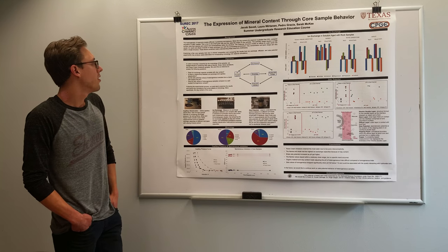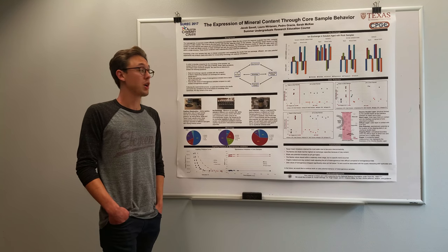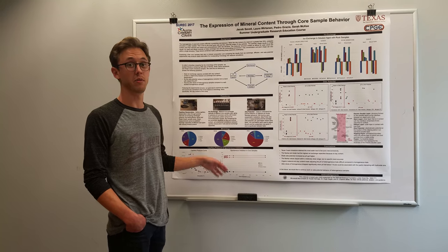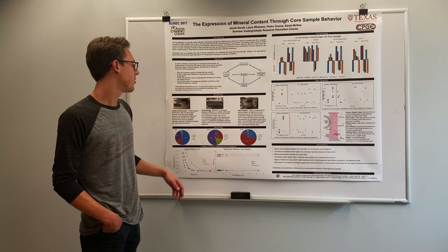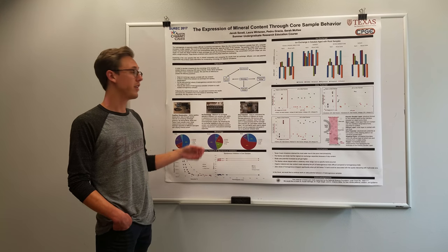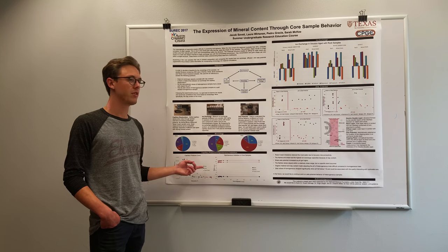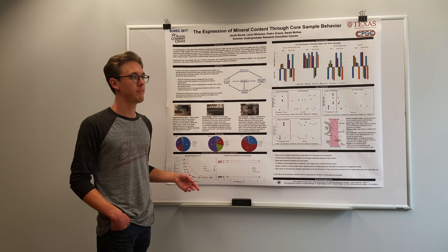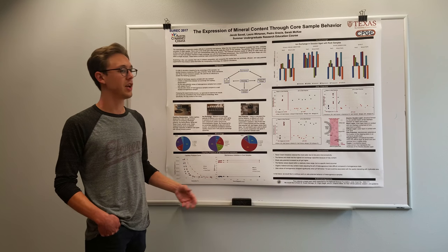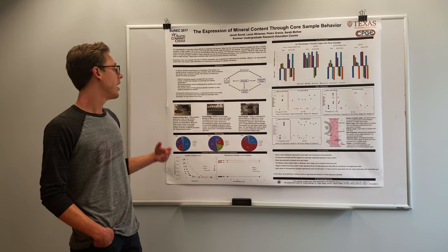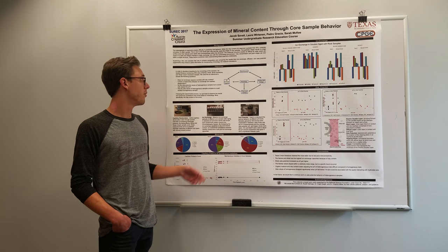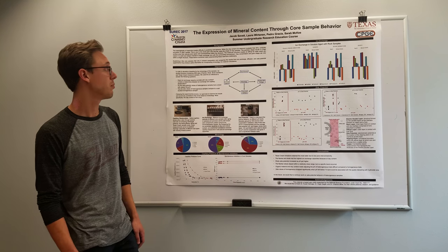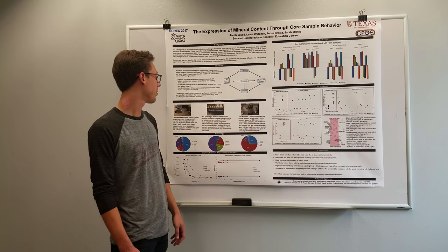The first thing we were looking at was the ion exchange capacity, and we wanted to know if it correlates at all with the mineralogy of those samples. The ion exchange process started by grinding up the samples and putting them in a NaCl solution and another solution of mixed salts, and aging them over a period of 10 days. After that period, we filtered out the rocks and ran them through an ICS machine to see what ions were swapped between these samples and in what quantities.